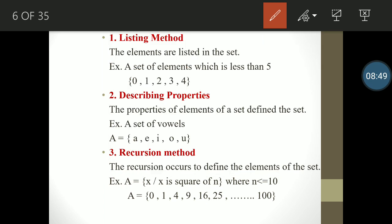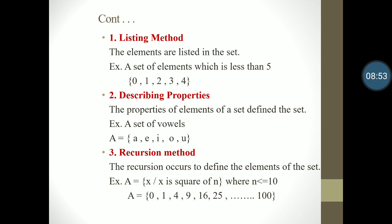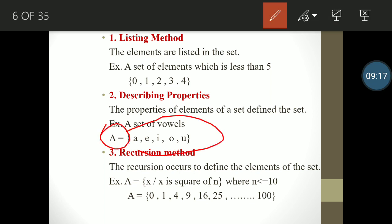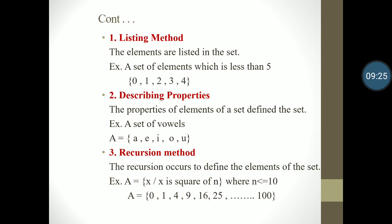The second method is describing properties — the properties of elements of a set define the set. For example, a set of vowels: that condition describes the property. There are only five vowels: a, e, i, o, u. So our set A = {a, e, i, o, u}. The third method is the recursive method, where recursion is used to define the elements of the set. For example, x is a square of n where n² ≤ 100 — we write only elements that are perfect squares and less than or equal to 100.